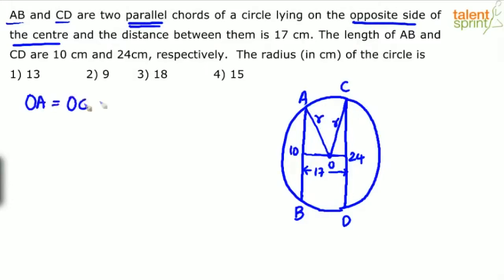A very important property we know about chords and circles is that from the center, when you drop a perpendicular on any chord, it will bisect the chord. Perpendicular means it makes an angle of 90 degrees. Similarly, from the center we drop a perpendicular on chord CD, making an angle of 90 degrees. The property is: any line dropped from the center to the chord will bisect the chord. Bisect means the first half is 5 and the second half is also 5. Similarly, here it is 12 and 12 — because 24 divided into two equal parts gives 12 and 12.